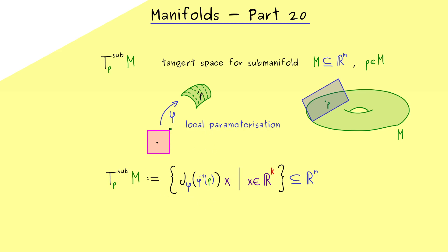However, this whole thing becomes a problem if we want to generalize it for abstract manifolds. Simply because there we don't have a space around the manifold — we don't have the common Rn around it. Hence, even if we define the map phi as the inverse of a local chart, we still don't get the Jacobian matrix of it, because the Jacobian only makes sense for a map from Rk into Rn. Therefore, we have to reformulate the tangent space such that a generalization for abstract manifolds is also possible.